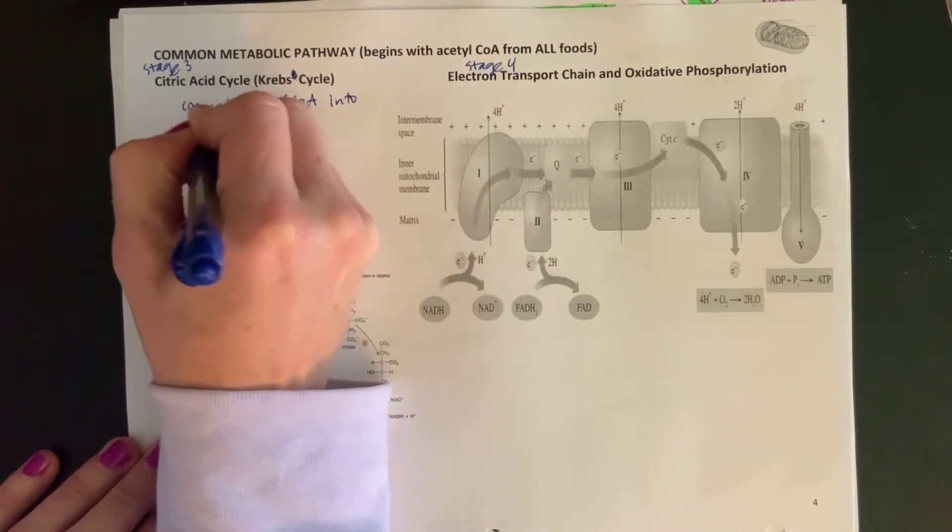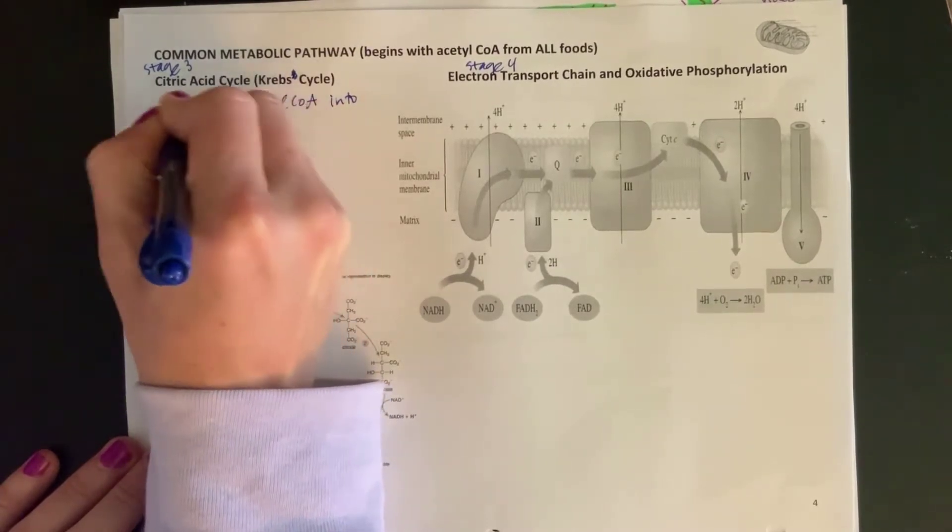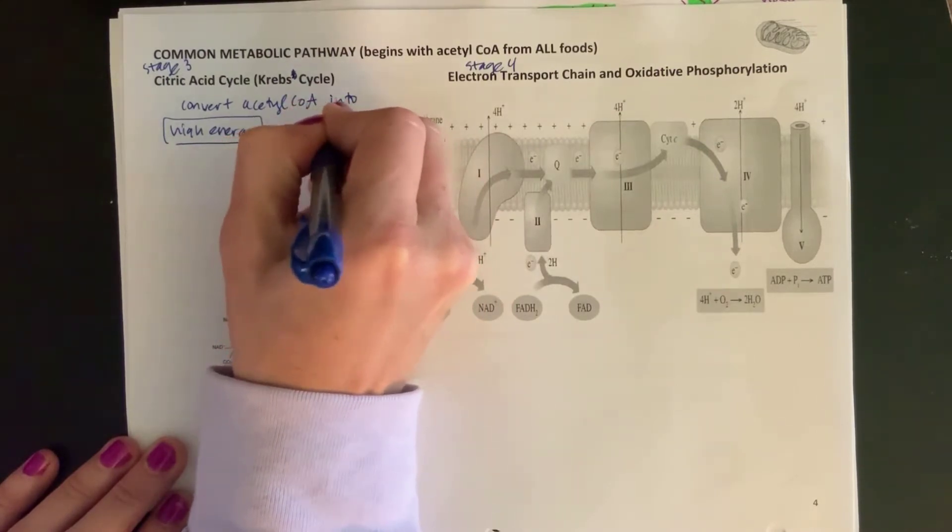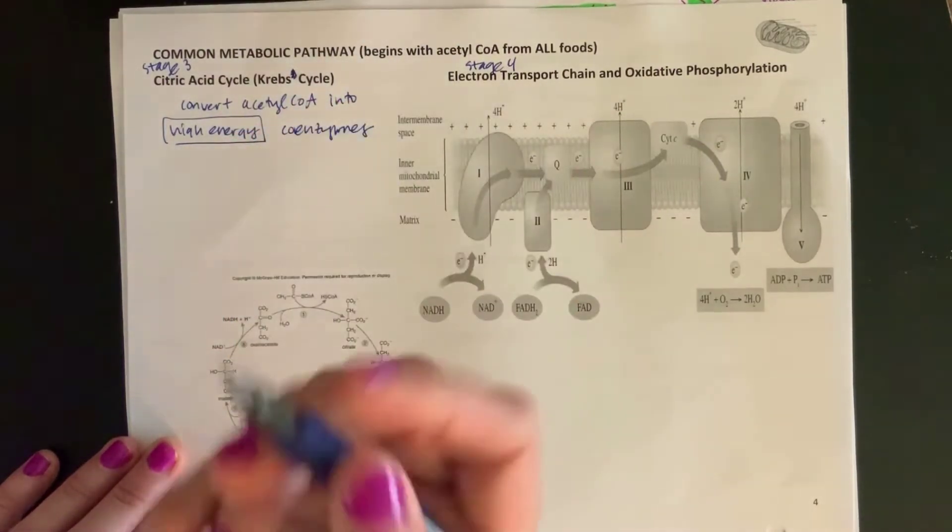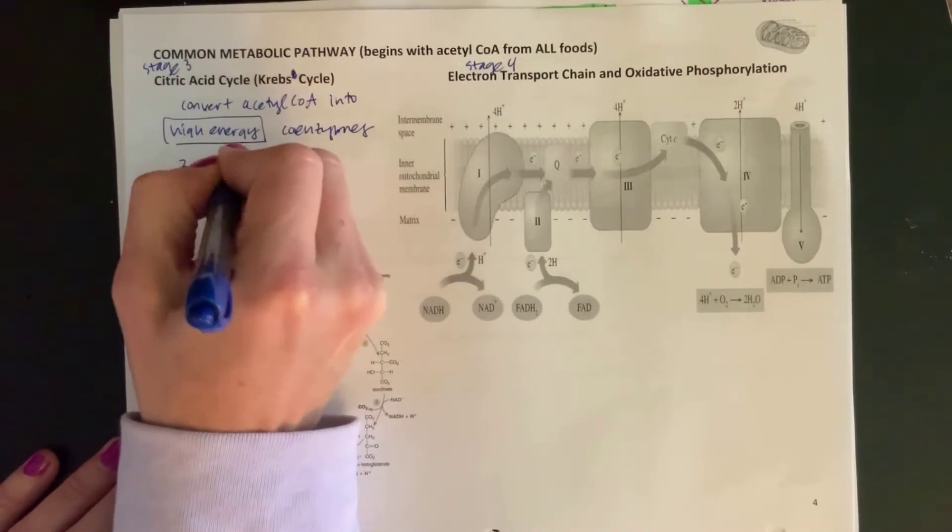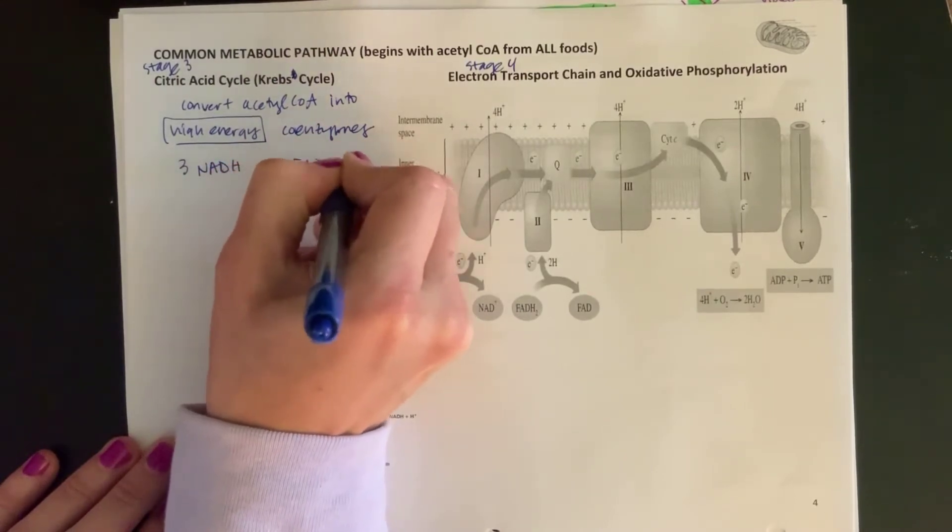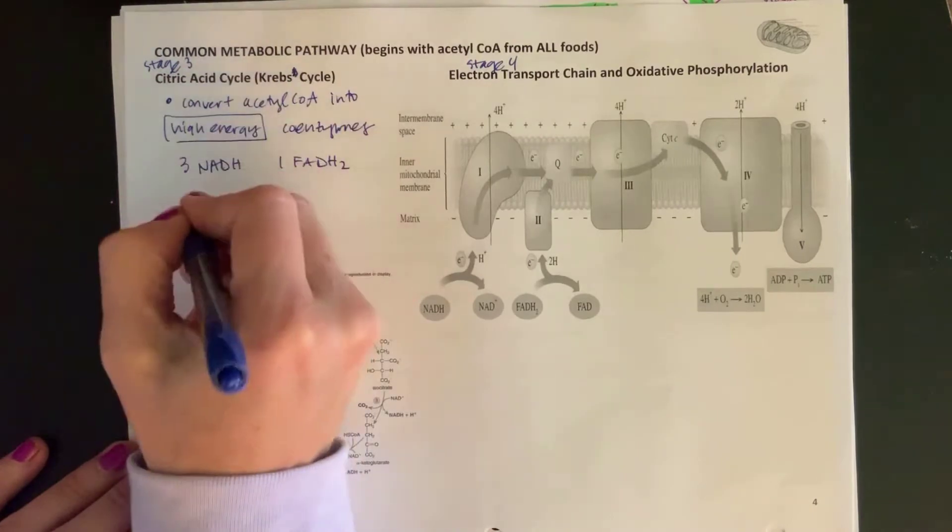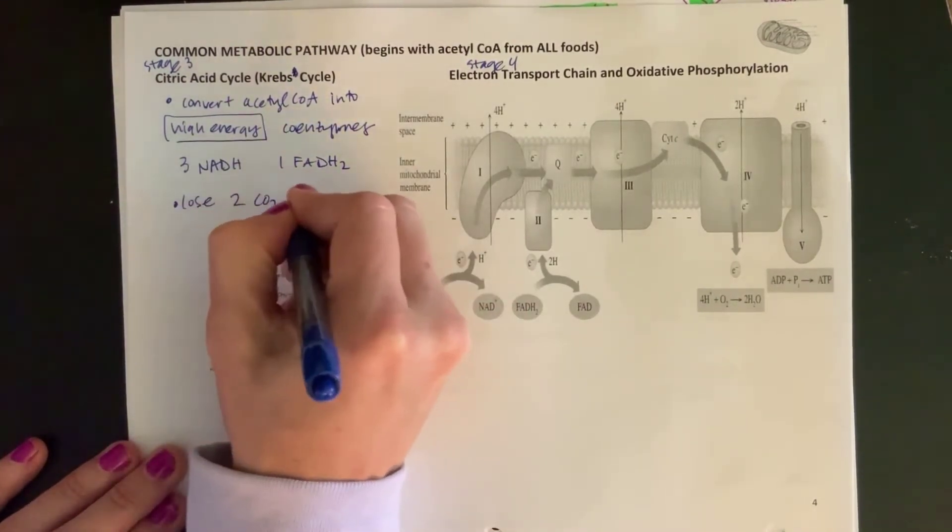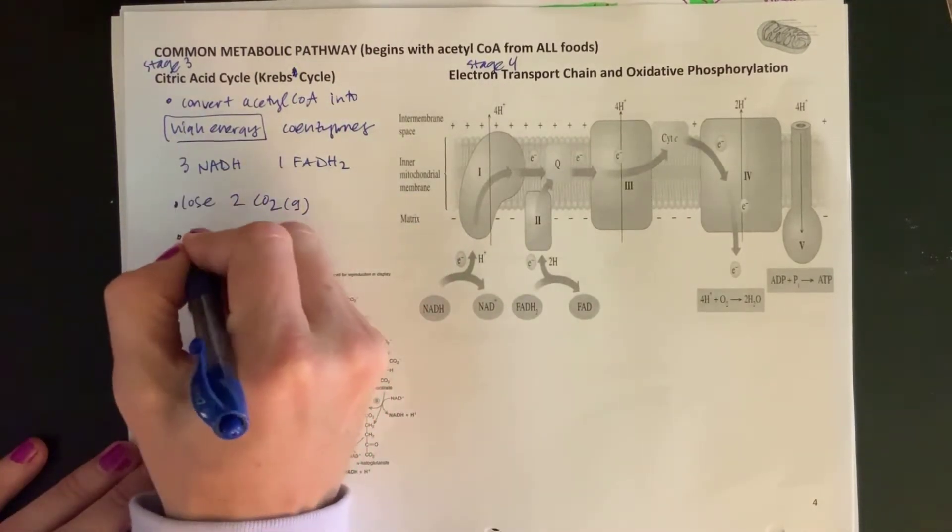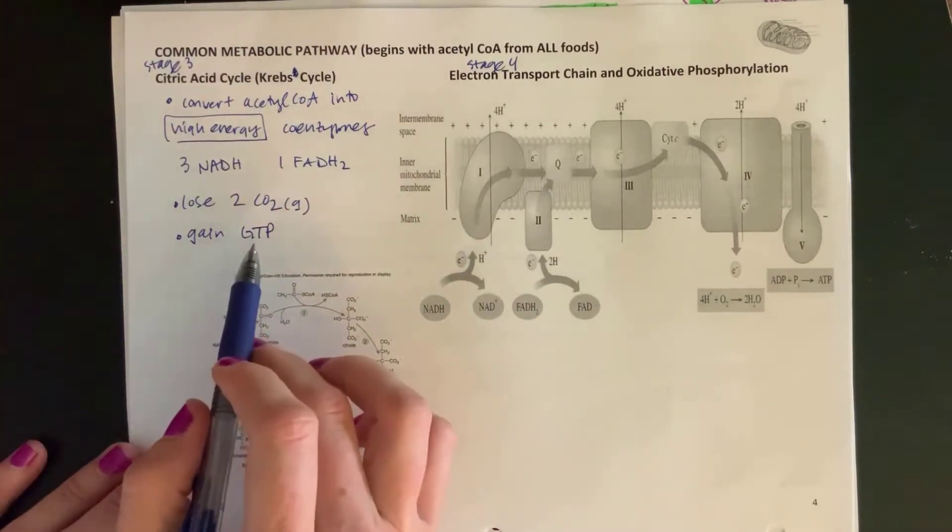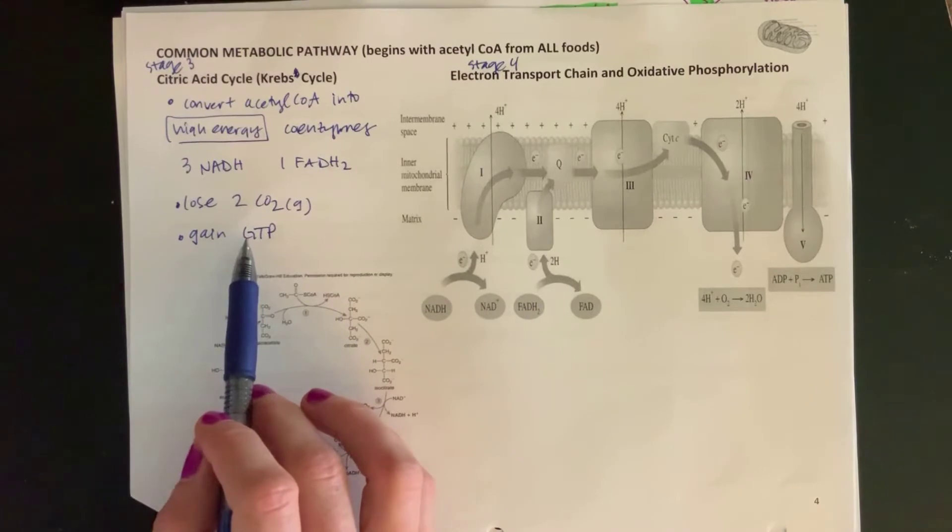For every one acetyl CoA that gets processed, you're going to get three NADH and one FADH2 coenzymes. At the same time, we're going to lose two carbon dioxides—those are gases, so that's what we're breathing out. We also, as a little side bonus, gain a GTP, which is the same as ATP in terms of providing energy. It just has a different base, guanine instead of adenine.